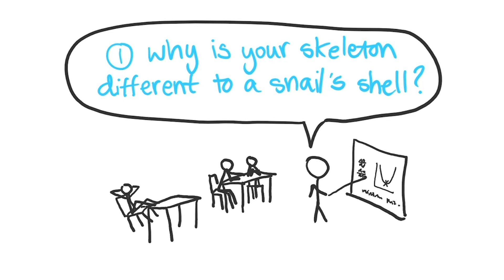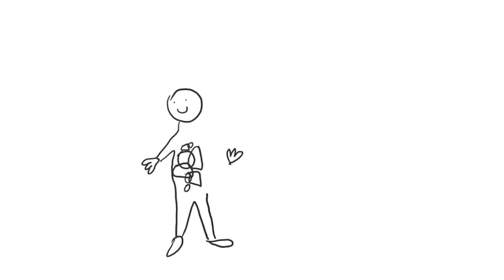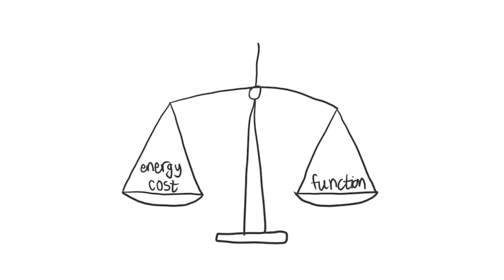Living things like you and me exist because of organisation but this needs a lot of energy to maintain. This is where optimisation comes in. How do you make a body that needs the least energy but still does a lot of functions? We're going to focus on a body part common to both of us and most animals: the skeleton.